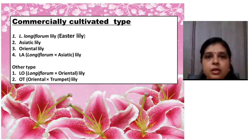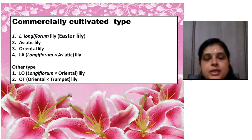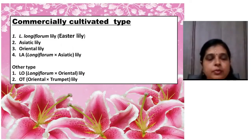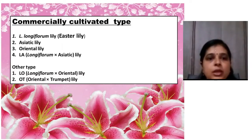Around 110 species are accepted under the genus Lilium. Four types are cultivated on a commercial scale: first, Lilium longiflorum (also called Easter lily); second, Asiatic lily; third, Oriental lily; and fourth, LA lily, which is a cross of longiflorum and Asiatic. Yellow lily (longiflorum × Oriental) and OT lily (Oriental × Trumpet) are also being grown.